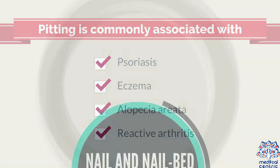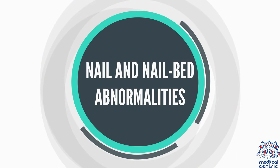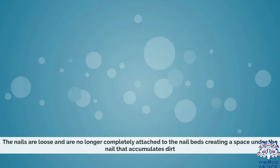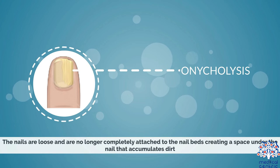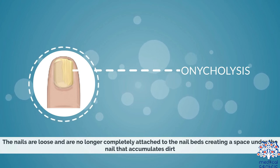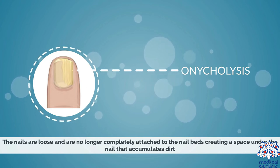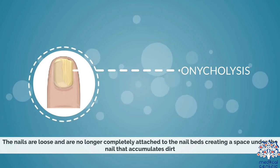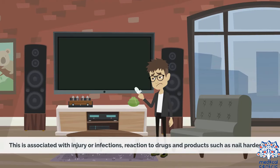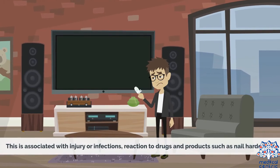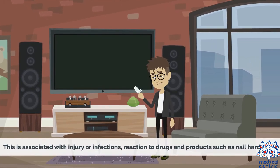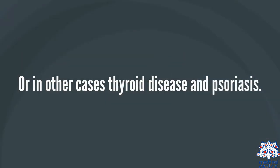Nail and nail bed abnormalities. Onycholysis: the nails are loose and are no longer completely attached to the nail beds, creating a space under the nail that accumulates dirt. This is associated with injury or infections, reaction to drugs and products such as nail hardeners, or in other cases, thyroid disease and psoriasis.